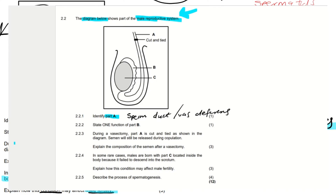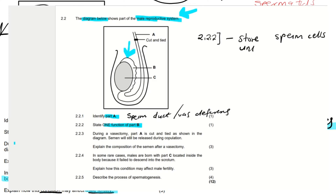Remember its function. Now let's go to 2.2.2. It says state one function of part B. Part B is showing the epididymis because it is just right next to the testes. The function of the epididymis is to store sperm cells until maturation.